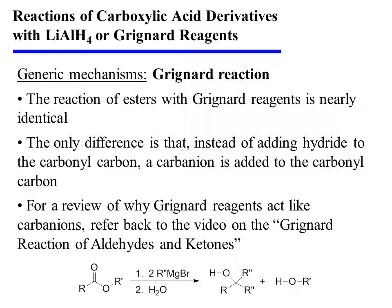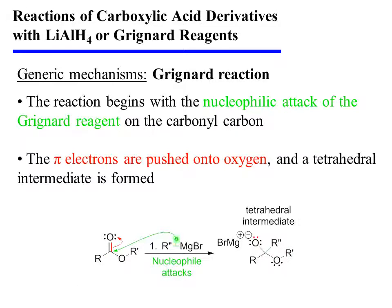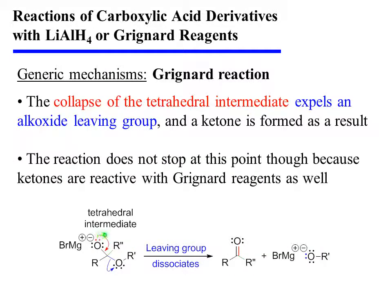The reaction of esters with Grignard reagents is nearly identical. The only difference is that instead of adding hydride to the carbonyl carbon, a carbanion is added to the carbonyl carbon instead. For a review of why Grignard reagents act like carbanions, you may wish to refer back to the video on the Grignard reaction of aldehydes and ketones. The reaction begins with the nucleophilic attack of the Grignard reagent on the carbonyl carbon. Pi electrons are pushed onto oxygen as a result, and a tetrahedral intermediate is formed.